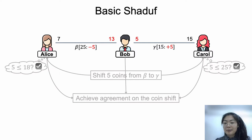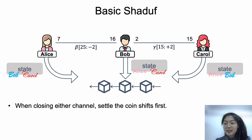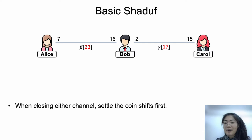After that, the coin shift takes effect. Bob's balances in the two channels are updated. At the same time, beta's capacity is decreased by 5 and gamma's capacity is increased by 5. But the changes are off-chain and recorded by the users. Naturally, the coin shift could be performed multiple times and in both directions. For example, shift 3 coins from gamma to beta. At that time, Alice and Carol do the symmetrical checks. Carol checks that Bob has sufficient coins in gamma, and Alice checks that gamma's current capacity, 20, is no less than the shifted 3 coins. Then they could proceed the shift procedure. When either channel initiates closing, the blockchain first updates the channel capacities according to the latest coin shift state submitted by the users, then returns the channel balances to the users.